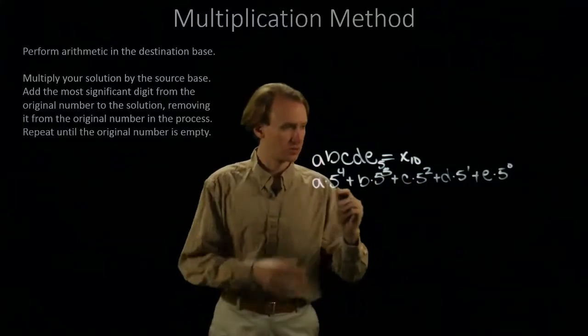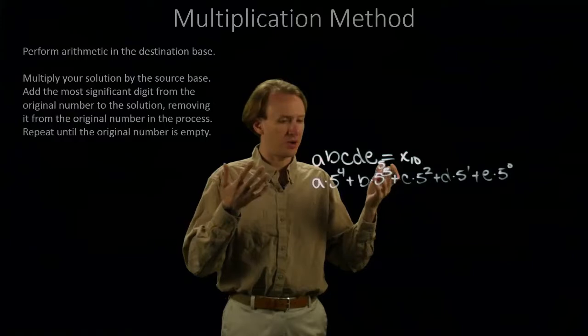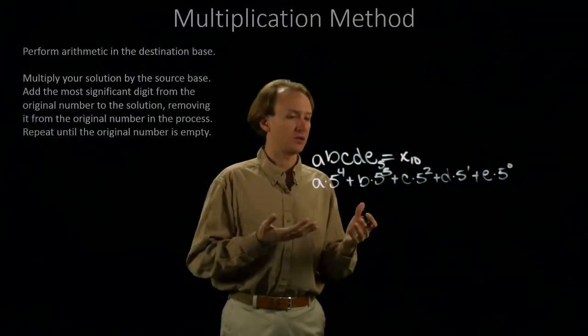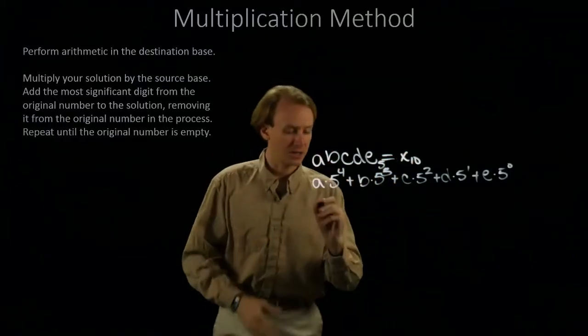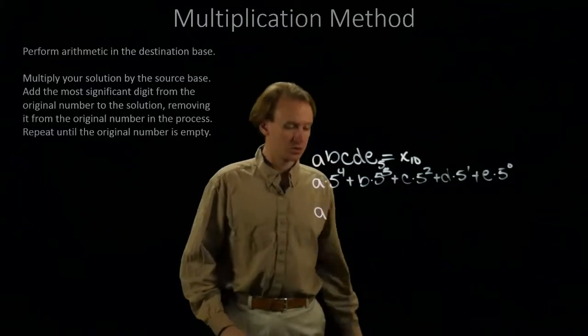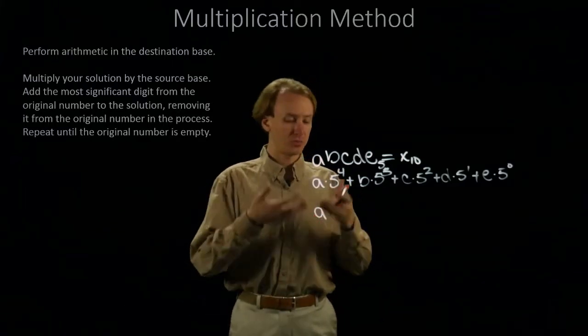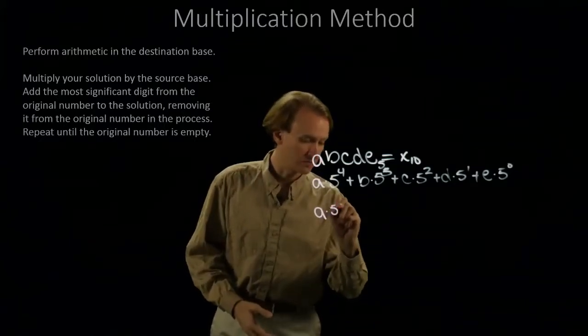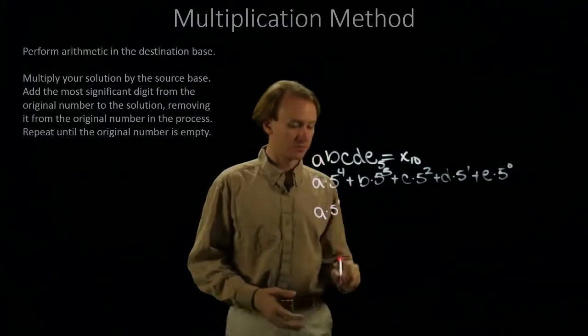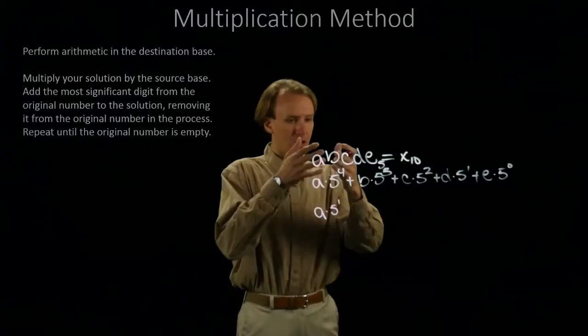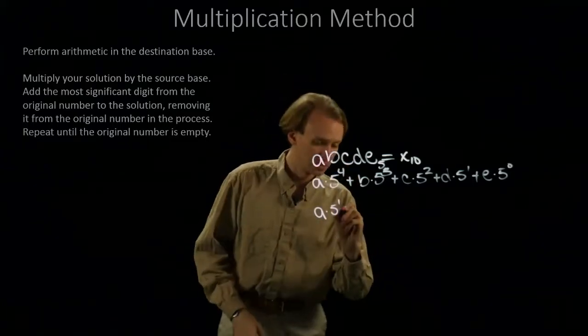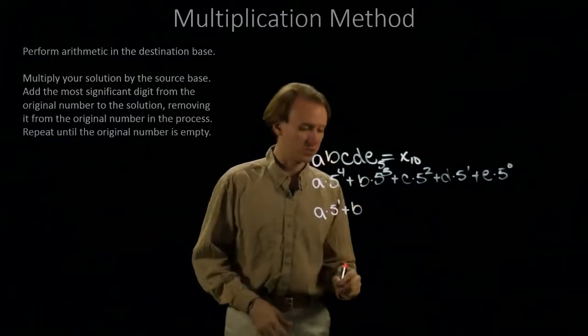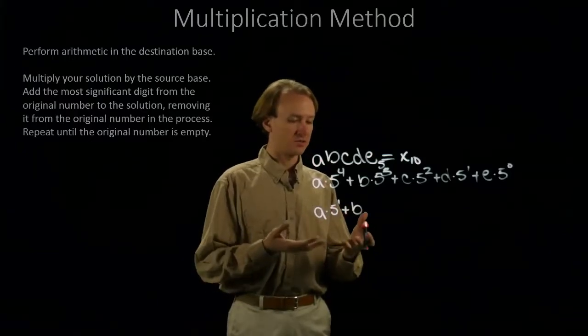So, I start with nothing. I multiply it by 5. I still have nothing. But now I add in A. So, now I have A. Go back to the beginning. Multiply this by 5. Now I have A times 5 to the 1st. Now I add in B. So, plus B. This is the end of the second iteration.